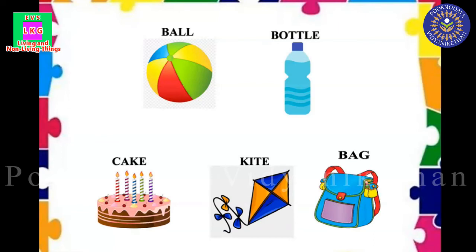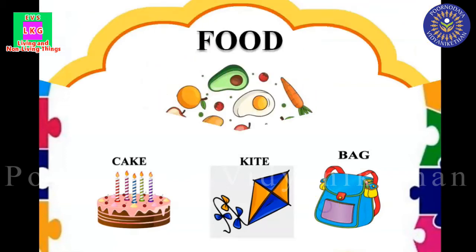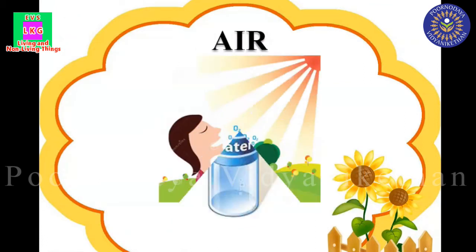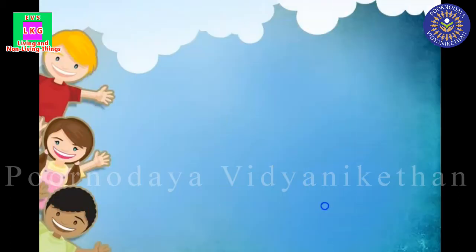Now can you tell me how I classified them? We will discuss about that. In the first group, all the things need food, water and air to live. They are called living things. We all are living things.